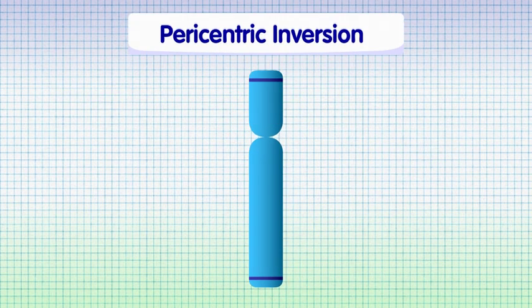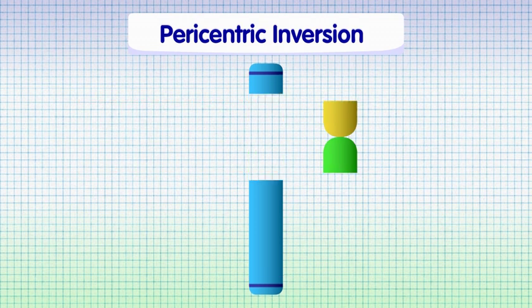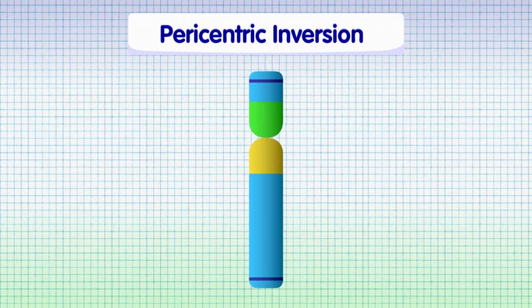A pericentric inversion describes a situation where a chromosome has broken each side of the centromere and the segment has turned 180 degrees and reinserted itself upside down.